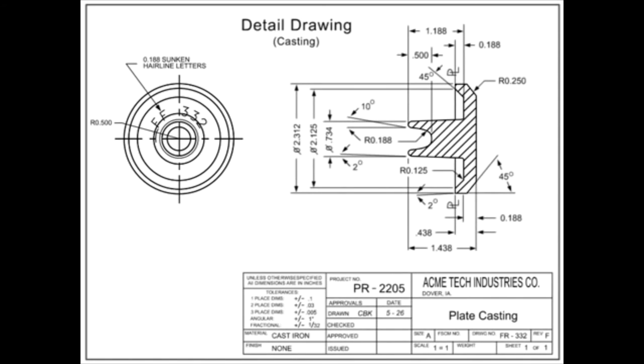The dimensions on a casting drawing are what the foundry or manufacturer uses to make a pattern or mold and are the final cast dimensions of the part.